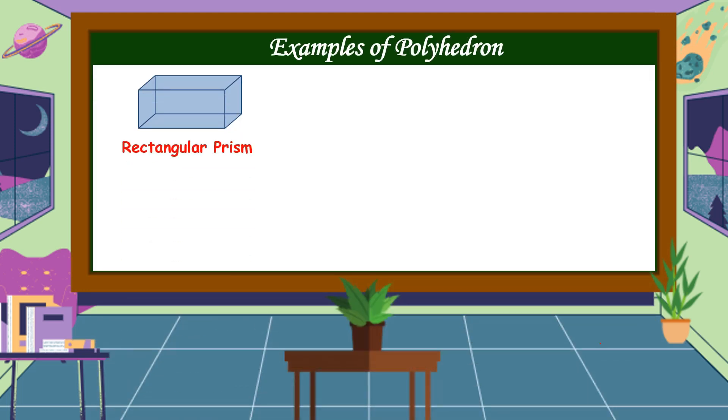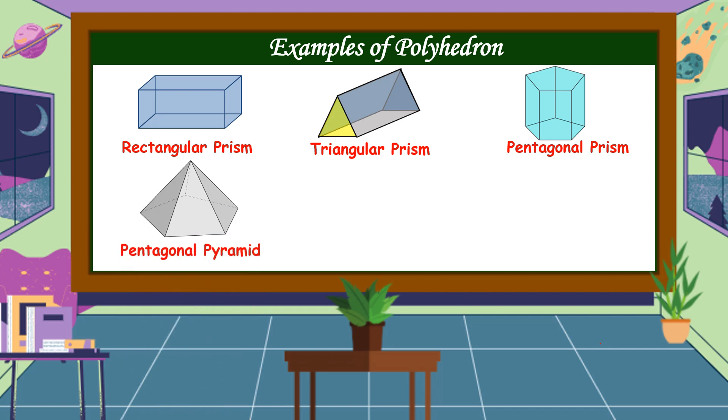Here are some examples of polyhedron. We have rectangular prism, triangular prism, and pentagonal prism. We have also pentagonal pyramid, rectangular pyramid, and hexagonal pyramid.